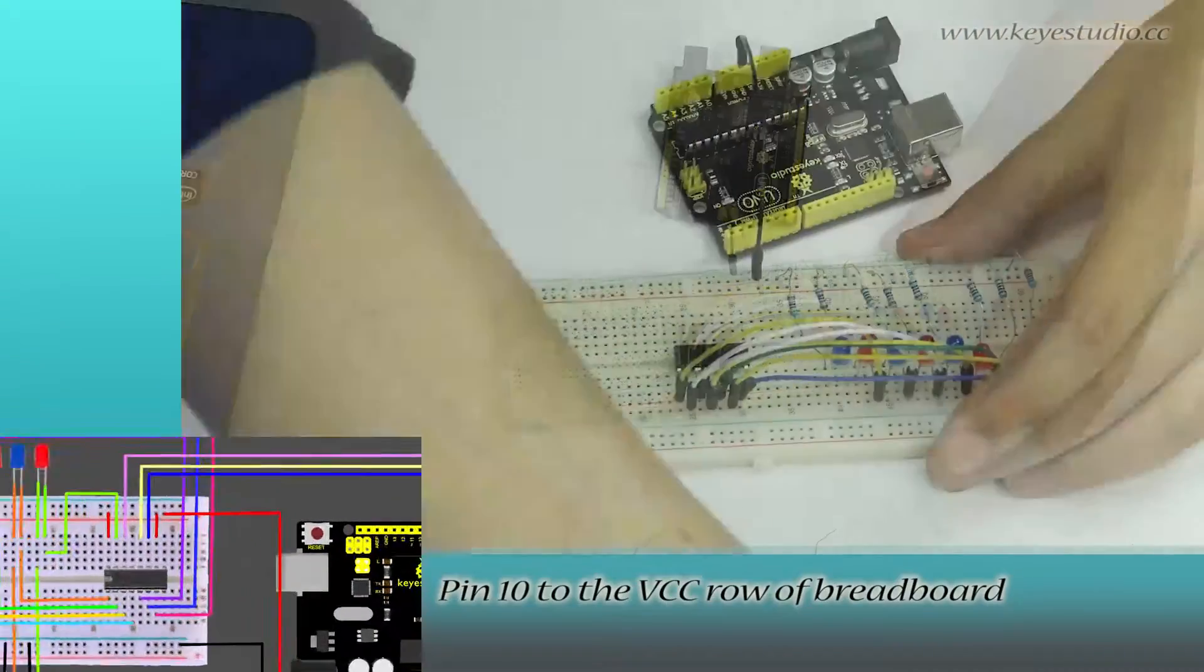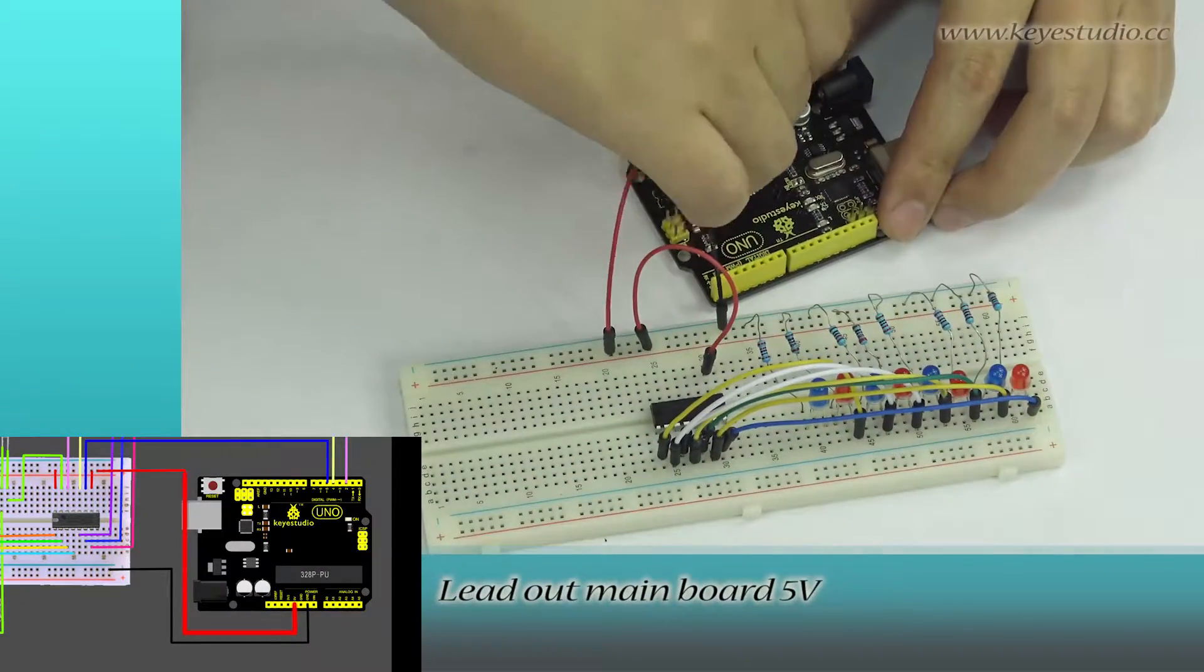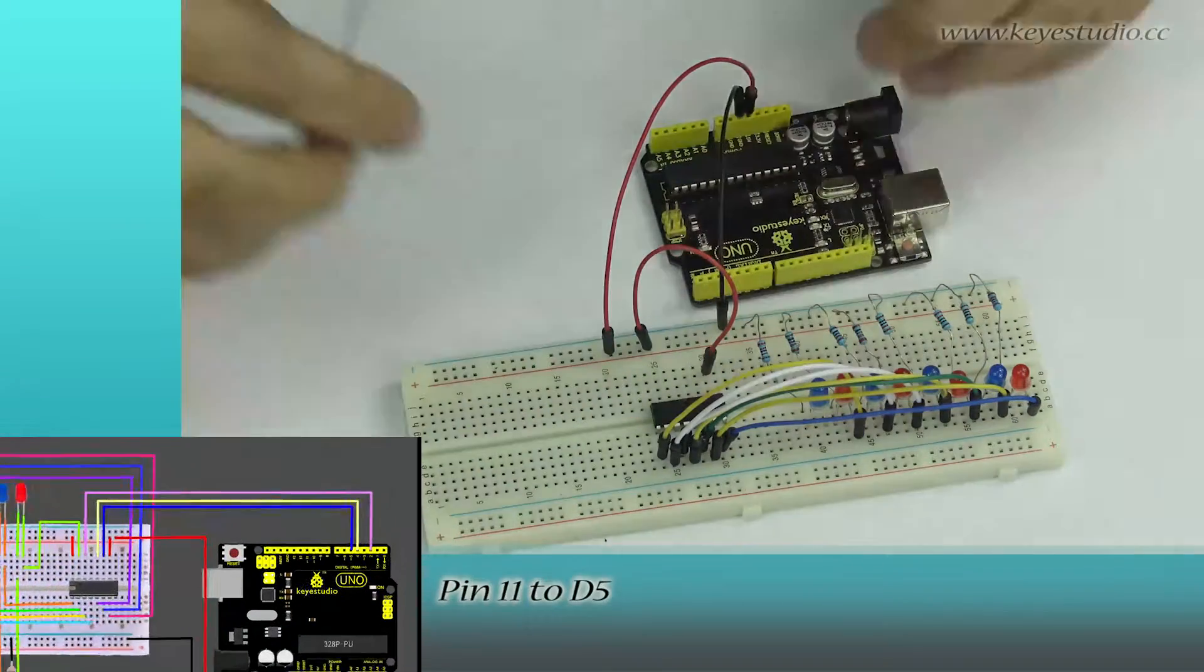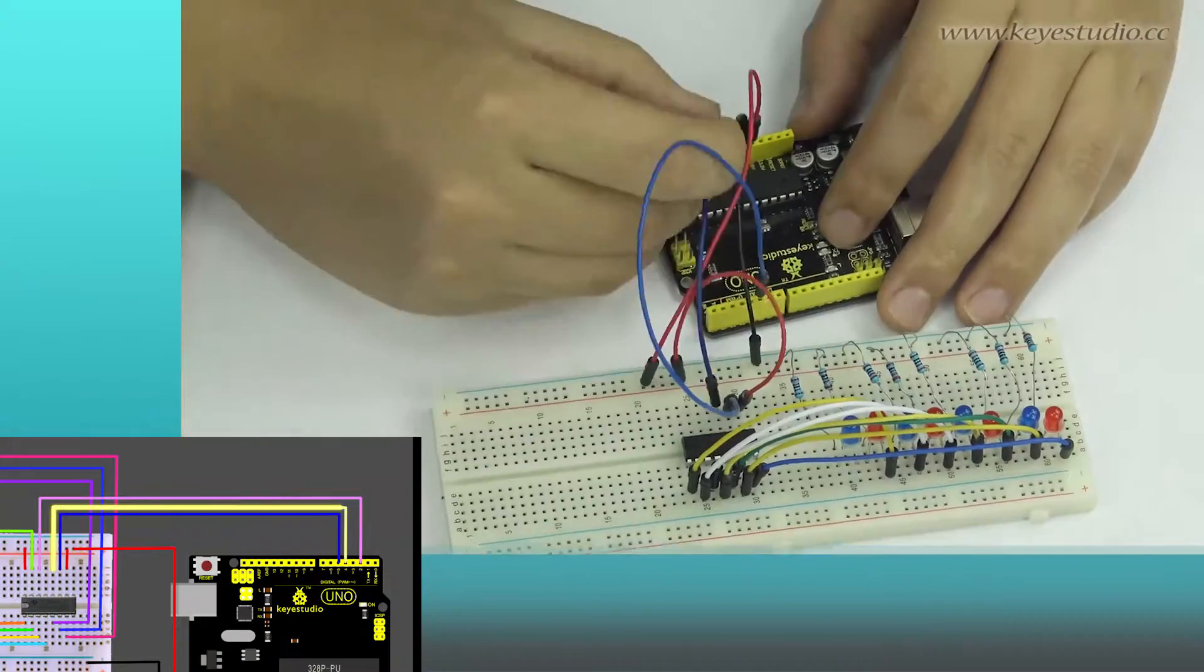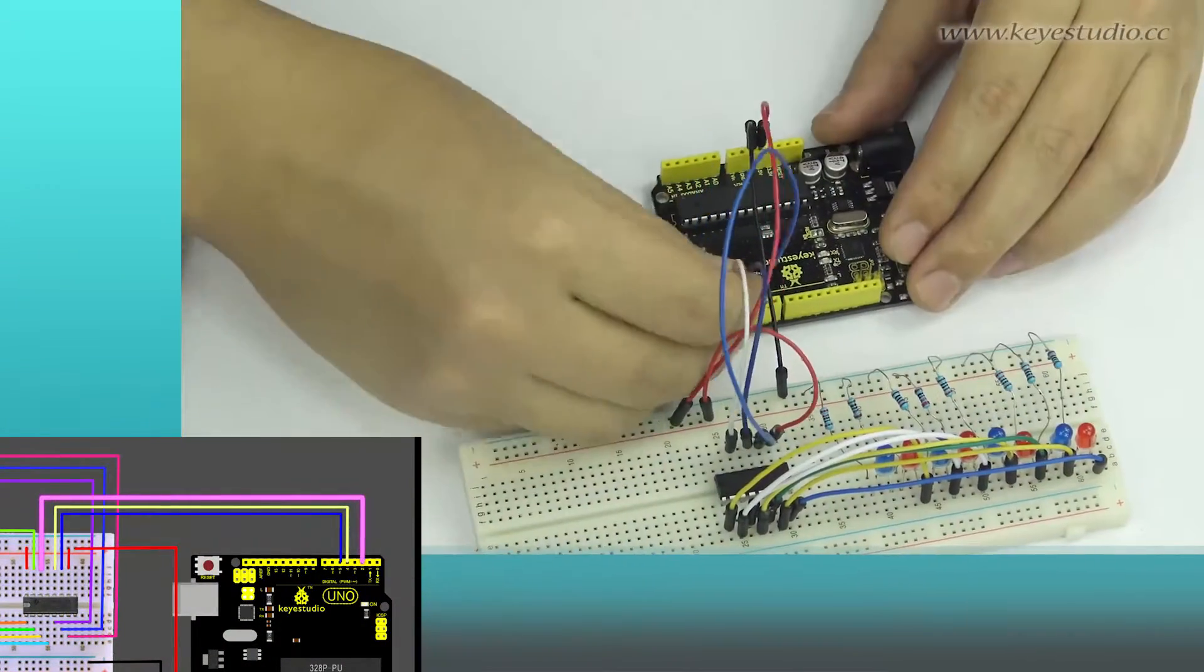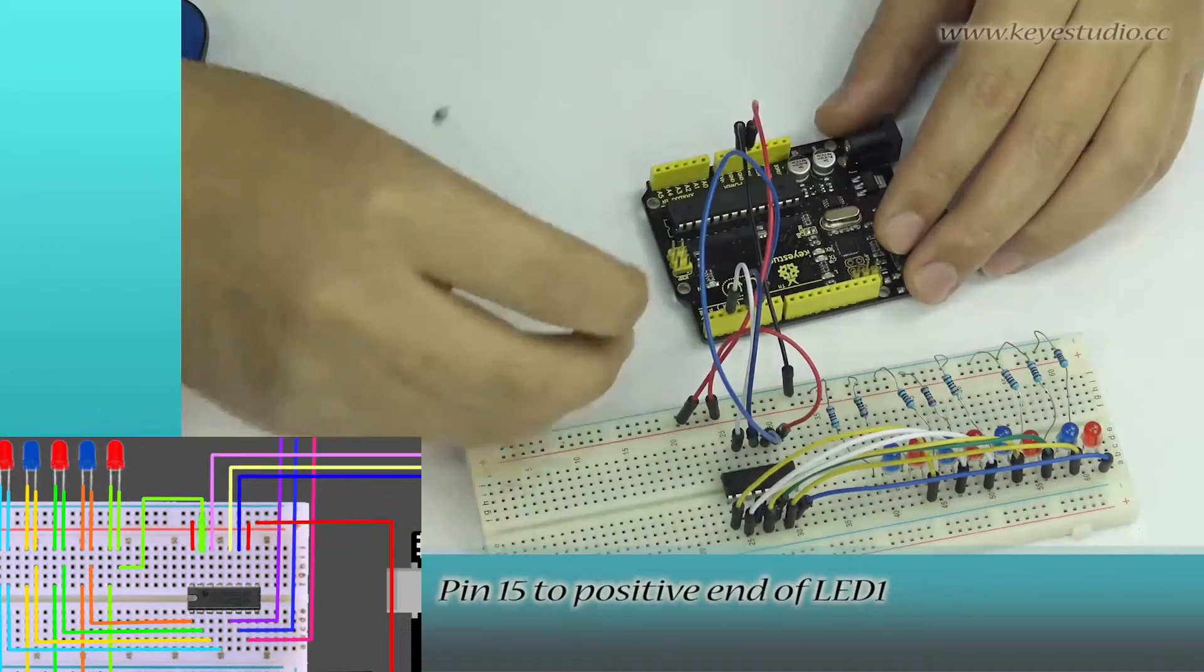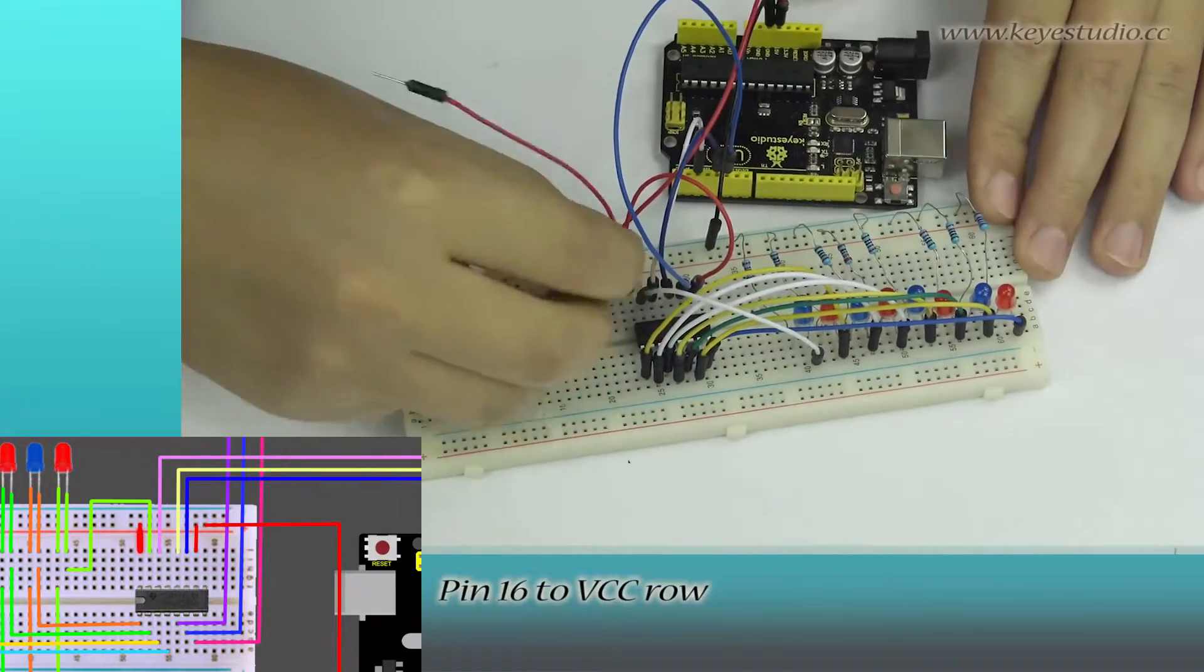Pin 10 to the ground of the breadboard. Lead out mainboard 5V. Pin 11 to D5. Pin 12 to D4. Pin 14 to D2. Pin 15 to positive end of LED 1. Pin 16 to VCC rail.